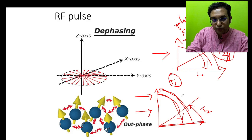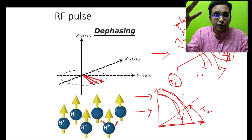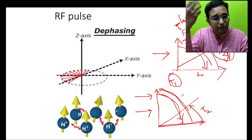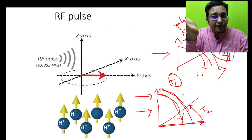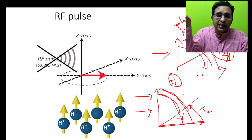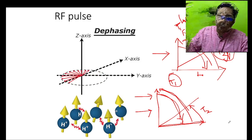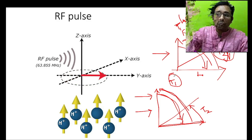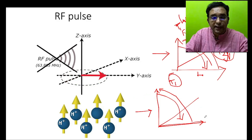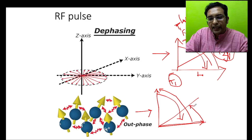The proton content is different in different tissues, same as the water content is different in different tissues, and even within the same tissue it will be variable at various areas. The time taken for the fallen protons to come back to the original longitudinal low-energy position will be variable for different tissues, and hence the T1 relaxation will be different for different tissues. Similarly, the energy lost by the lying-down protons as they return to the longitudinal position also varies, and this is called T2 decay.